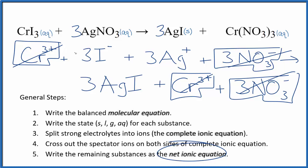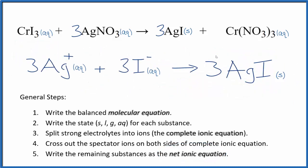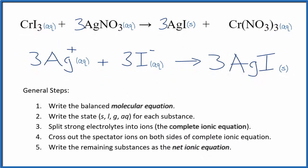I'll clean it up and write the states — we'll have our net ionic equation. So this is the balanced net ionic equation. But note we have three in front of everything, so we can reduce that down to one, and by convention we don't write the one. So this is a more accurate representation of our net ionic equation.